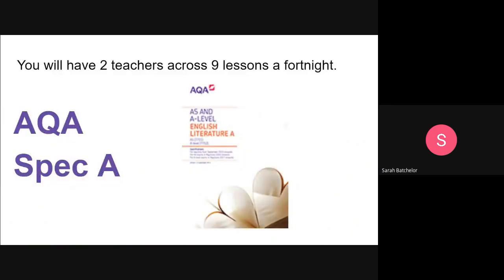You will have two teachers at A-Level for English. You'll have nine lessons a fortnight, and the lessons will be divided between those two teachers. This year in Year 12, there will be myself and Mrs Pierce, and we'll be teaching you the set texts and the NEA as a team. You'll be studying the AQA Specification A, and it's important that you recognise that there are two specifications for English Literature.